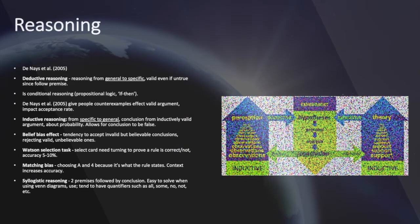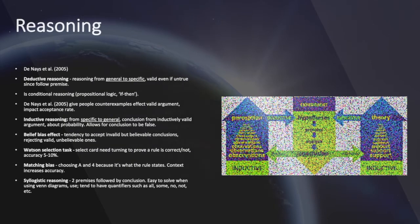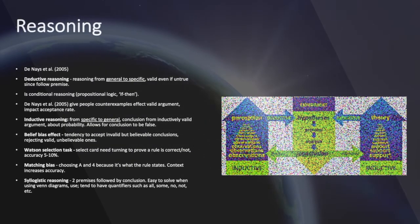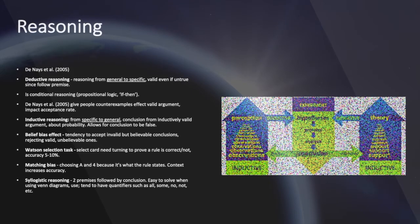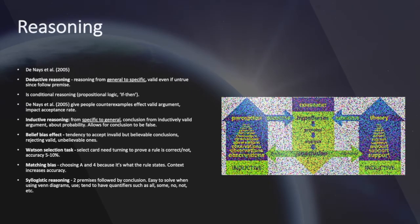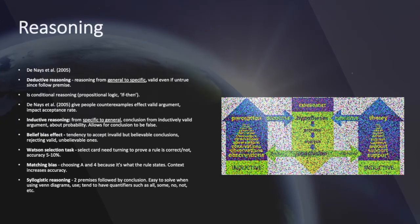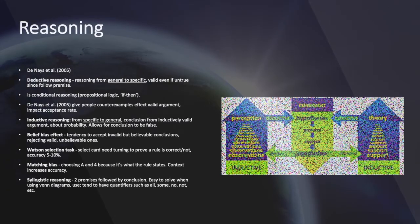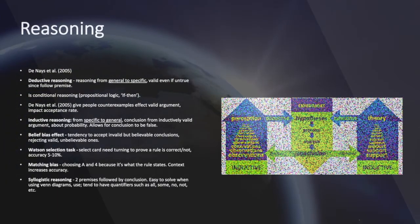Inductive reasoning, as opposed to deductive reasoning, is from specific to general whereby conclusions are made from inductively valid arguments. It's based on probability as opposed to following premises. It allows for conclusions to be false. An example of inductive reasoning is using statistics, having a sample and trying to use that to generalize to the population.